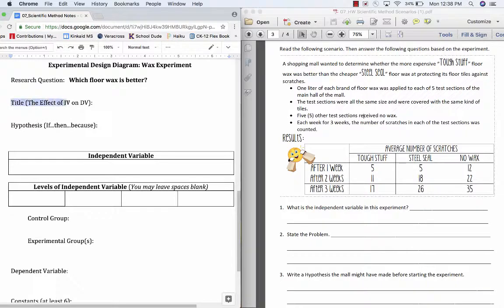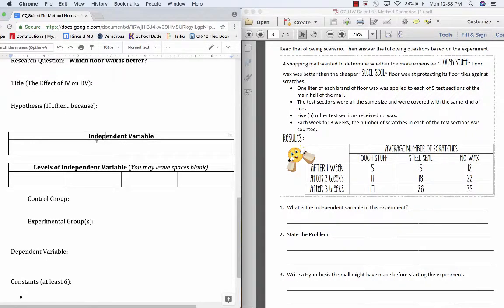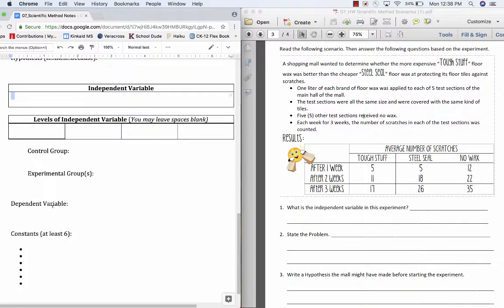In order to move on to the title, we use a certain format: the effect of the independent variable on the dependent variable. Notice that later in our EDD, it actually asks you, what's the independent and what is the dependent variable?